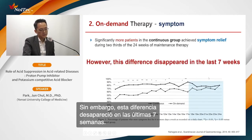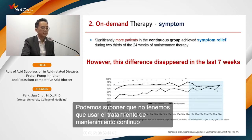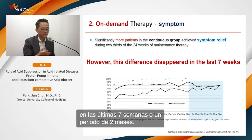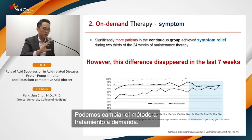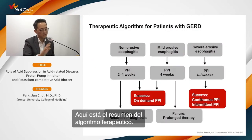However, regarding symptoms — since PPI's main goal is symptom relief — significantly more patients in the continuous group achieved symptom relief during the first two-thirds of the 24-week maintenance period. But this difference disappeared in the last seven weeks, suggesting we don't need continuous therapy indefinitely. After about two months, we can consider switching to on-demand therapy.